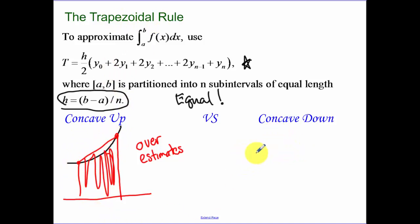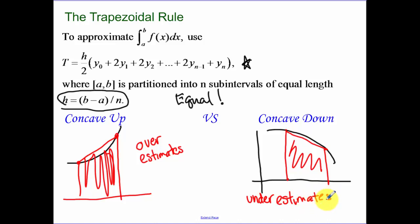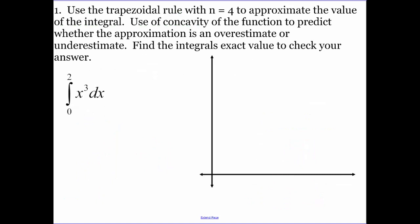Versus concave down, when our curve is concave down, to our x axis, from here to here, connecting our points. This concave down, this underestimates our area.